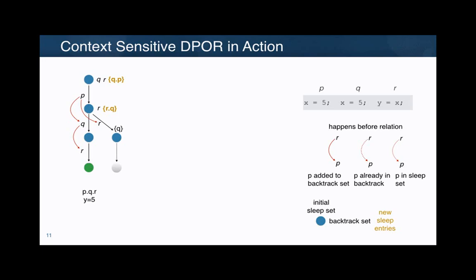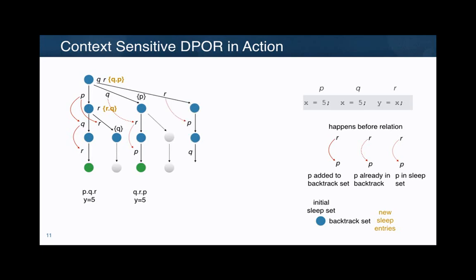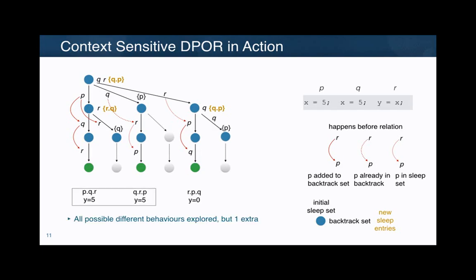Remember that in this example, all traditional methods have to explore the six sequences. Now we continue, taking advantage of this: don't do Q followed by P. We do Q, we cannot do P at this point, we do R and continue, and then we avoid this trace. The algorithm continues, detects that P and Q really commute in this context, produces the result, and avoids the other. We end up getting three explored sequences — actually one extra — but this could potentially be improved. All traditional methods would have explored six.